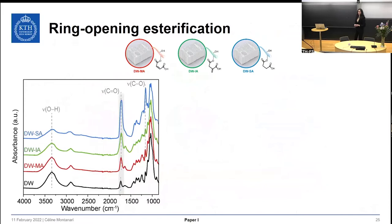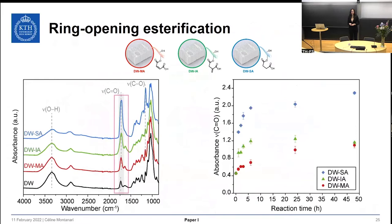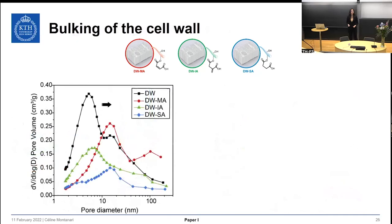The functionalization was monitored using Fourier transform infrared spectroscopy, where we could see a sharp increase in the carbonyl absorption peak compared to the delignified wood reference. We monitored the reaction rate by following the carbonyl peak absorption, and succinic anhydride reacted about eight times faster than maleic anhydride. Very short reaction times of about 30 minutes resulted in high carbonyl content of about 4 mmol per gram. The ring-opening esterification resulted in a bulking effect where large anhydride molecules occupy nanoscale pore space in the cell wall, supported by a decrease in pore volume in the 2–10 nm range.